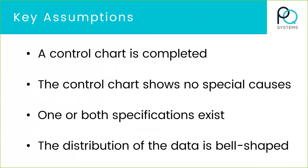For some key assumptions when you get to capability analysis: you've got to have a control chart, and that control chart is in a state of statistical control. In layman's terms, I like to say my process is stable — I can predict what's going to happen next based on the past X number of data points. Obviously for capability analysis you need to have one or both specifications. And the last requirement: the distribution of the data is bell-shaped. You can do capability analysis with data that is not bell-shaped — it's slightly different. We don't have time for that in this short webinar, but it can be done.